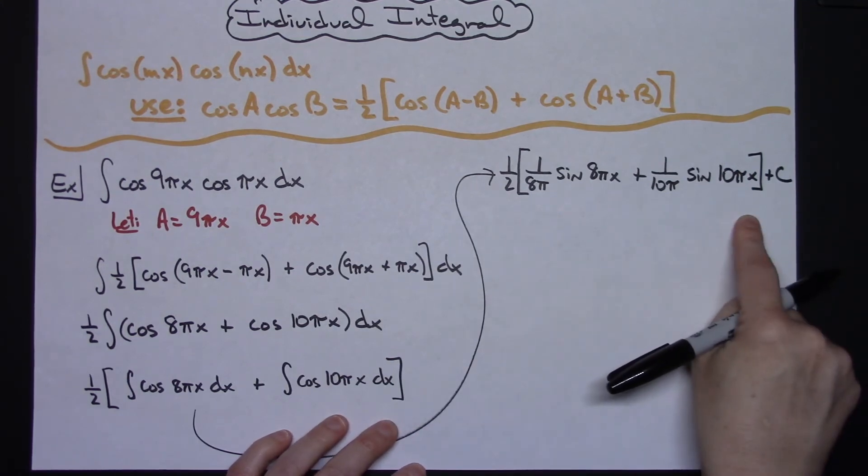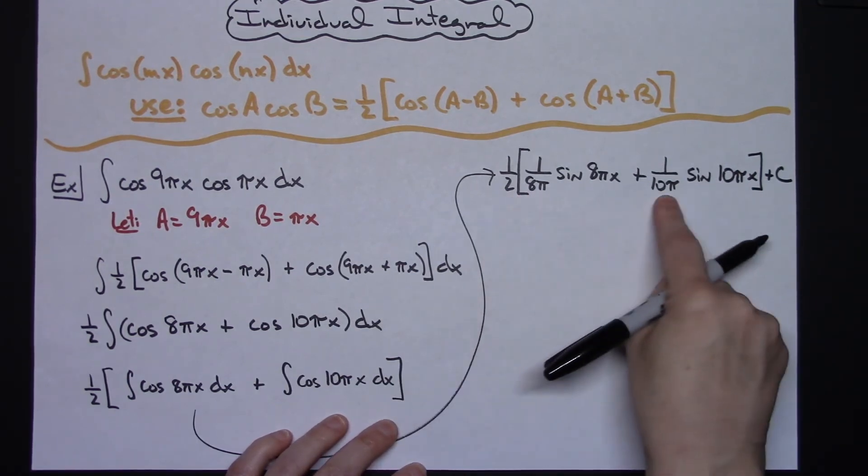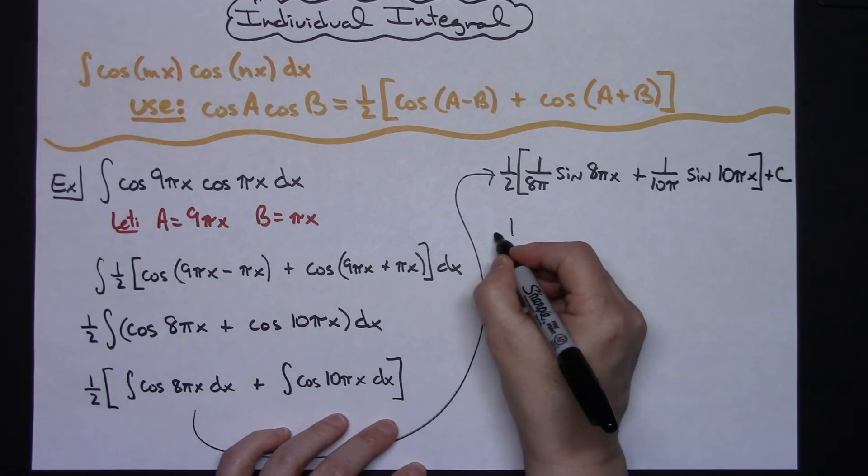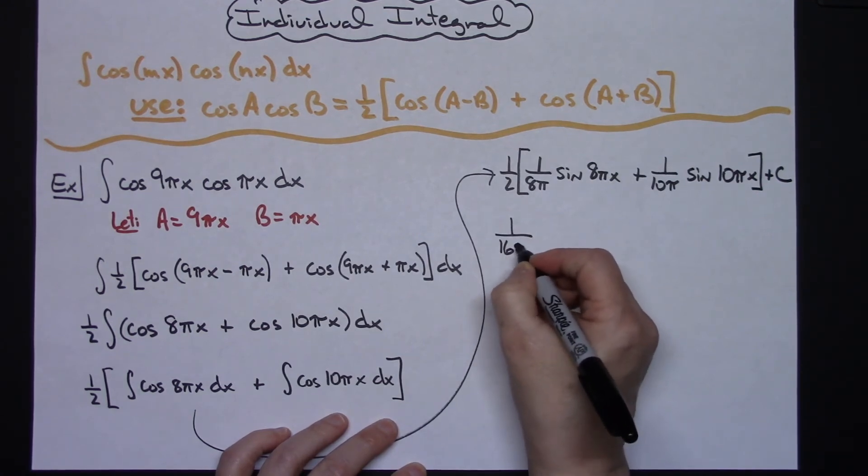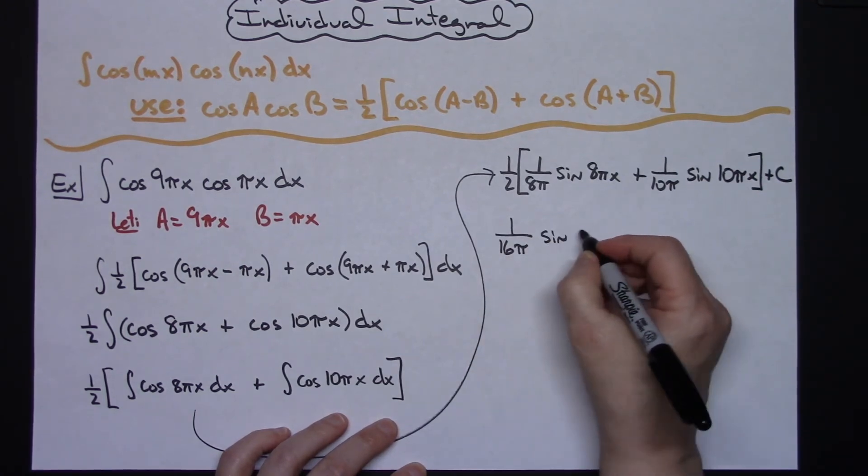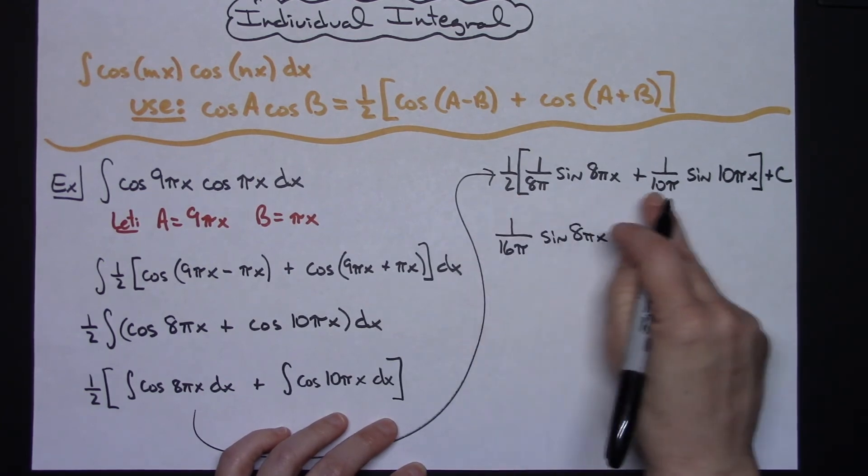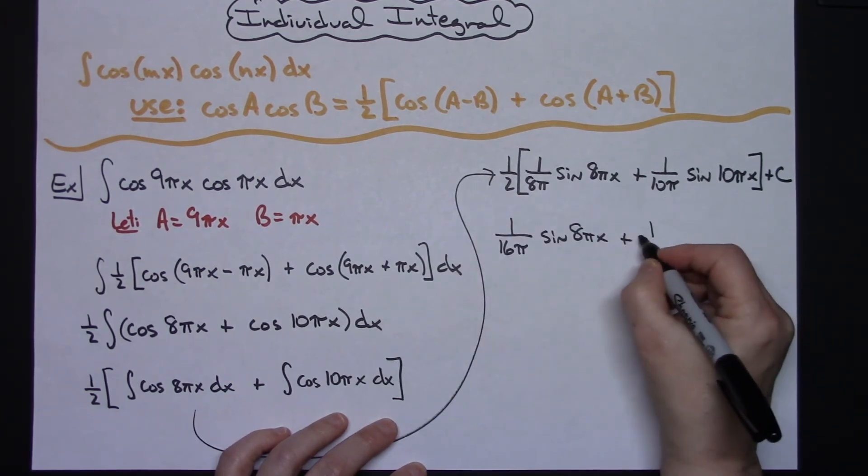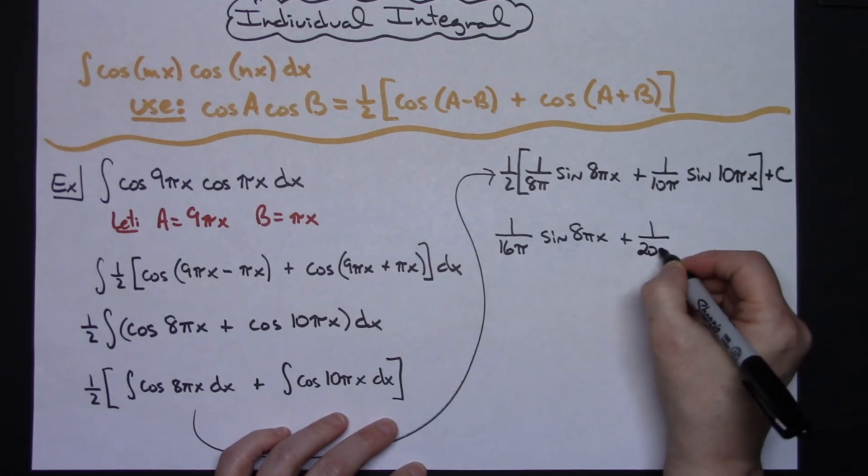The only thing I need to do is distribute the one half to both of those, so I'll have 1 over 16π sine 8πx plus 1 over 20π sine 10πx plus C.